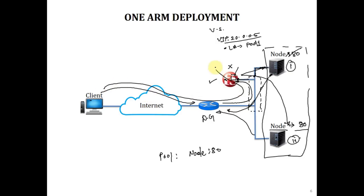We have asymmetric routing — traffic goes in one way and while coming back it goes directly to the router, not through F5. That's a problem. It works — if you want to make it work, it works, no problem. But we will not be able to utilize the full feature set of F5 Big-IP LTM. If we want to be able to do that, then we will have to make further changes.